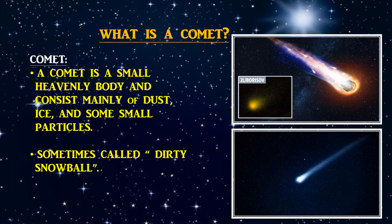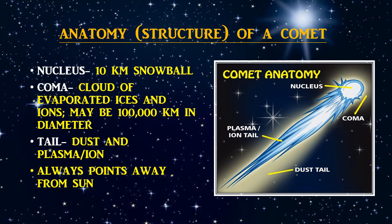So, what is a comet? A comet is a small heavenly body and consists of mainly dust, ice, and some small particles. They are sometimes called the dirty snowball. This is the anatomy or structure of the comet. The inner part of the comet is called the nucleus, with 10 km in diameter. The next part is the coma — a cloud of evaporated ices and ions with 100,000 km in diameter. Then it has tails: the dust tail and the plasma or ion tail. A comet always points away from the sun.